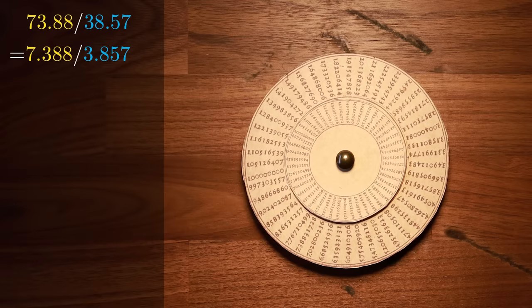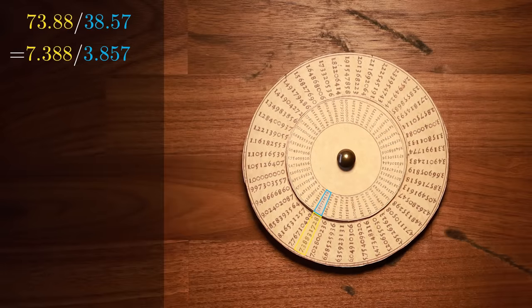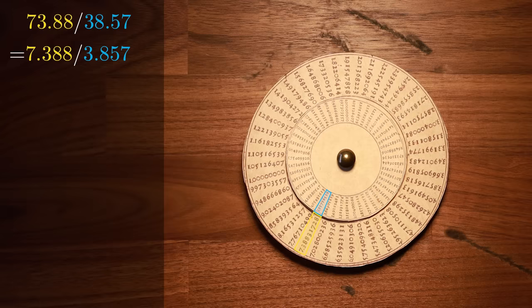We now need to find the closest value to 7.388 on our outer ring, and line it up with the closest value to 3.857 on our inner ring. We now just have to look for where the starting point of our inner ring intersects our outer ring. Looks like about 1.915. This is the correct answer.